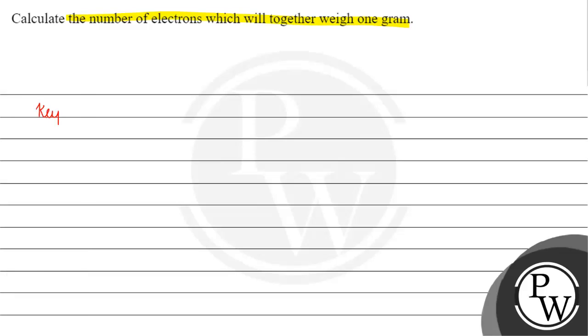Key concept for this question is mass of electron. What does it mean? Mass of electron is basically equals to 9.1 into 10 to the power minus 28 gram.